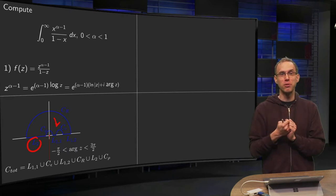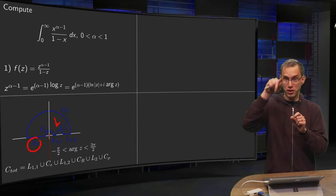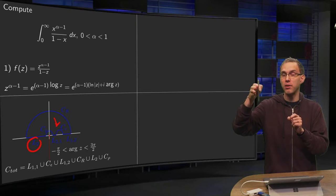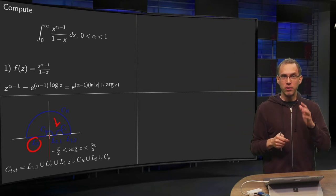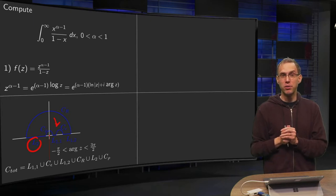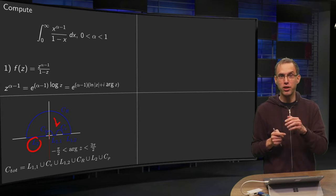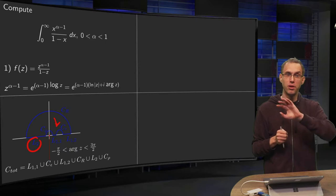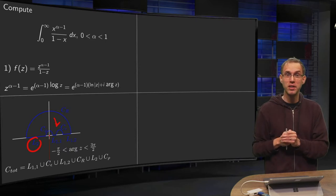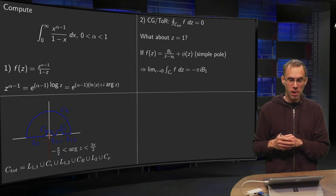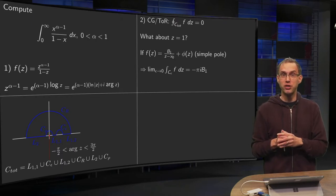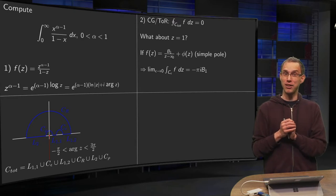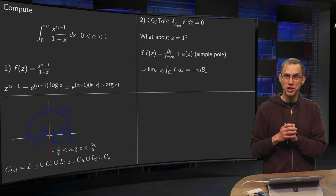So our total contour consists of 0, L11, c epsilon, L12, CR and L2. Well, just on the good side, we did the 0 and CR in previous video. Those integrals will vanish in the limit, but we still have a couple of other problems. First of all, we can use Cauchy-Goursat theorem of residues. No singularity is inside our contour, so integral along c total is 0. So that's easy.